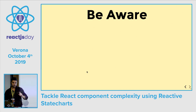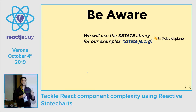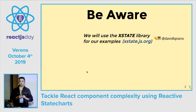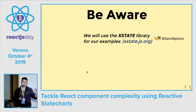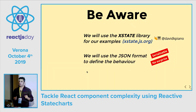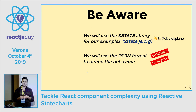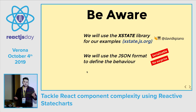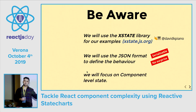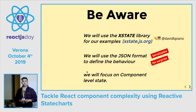Before we get practical, a couple of notes. For defining state machines, I'll use a library called XState, which is the most popular JavaScript implementation of the SCXML standard, written by David Khourshid. We'll use JSON format to define behavior — JSON is serializable, almost every language can encode and decode it, giving you portability across platforms. We can also use state machines not just for components but for app-level states, though we'll focus today on isolated complexity — one component that gets complicated.